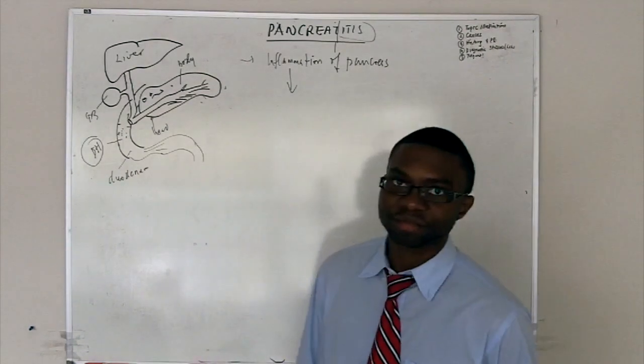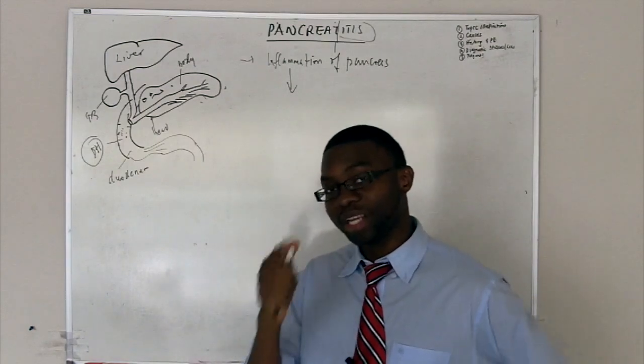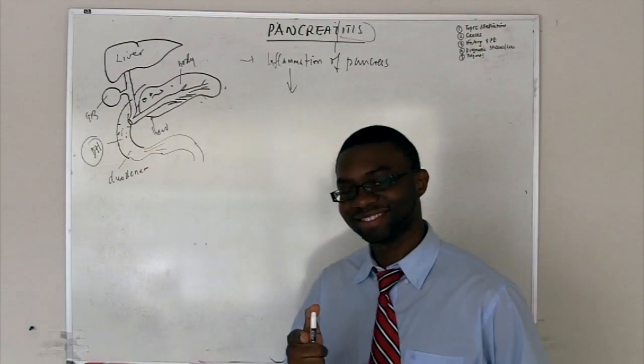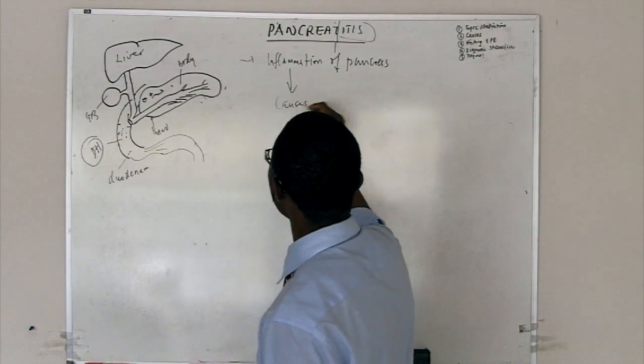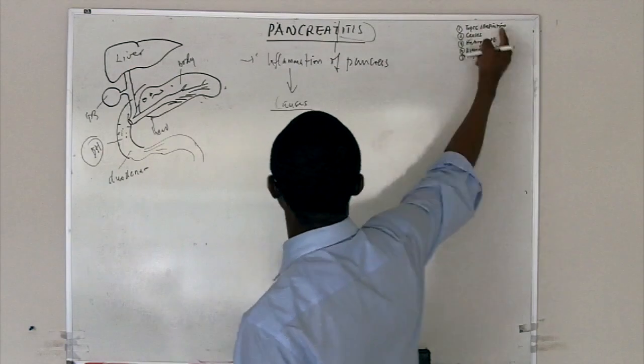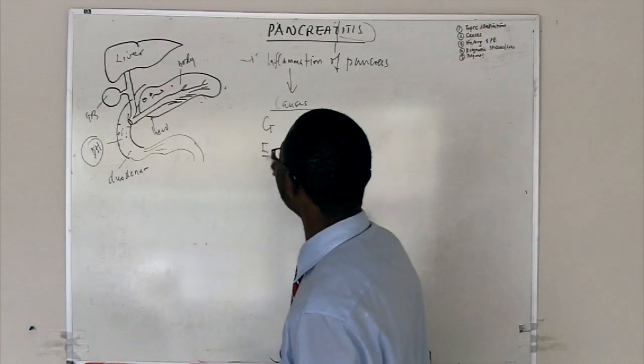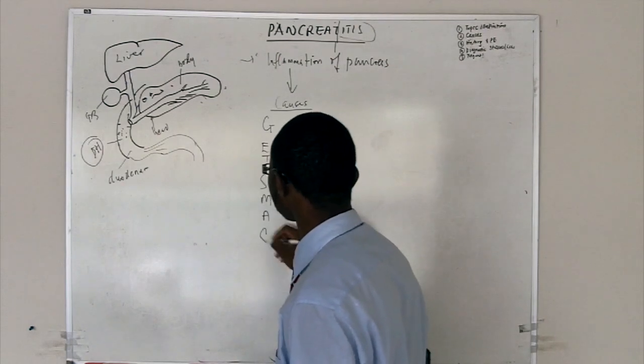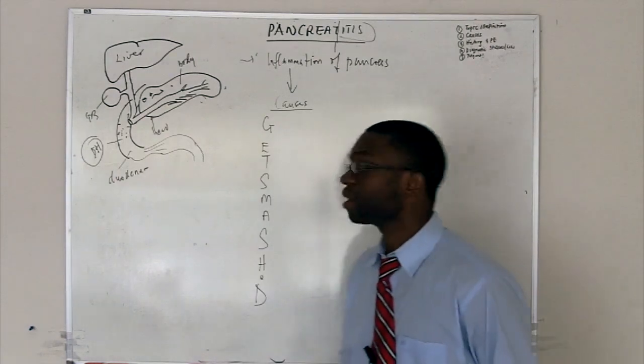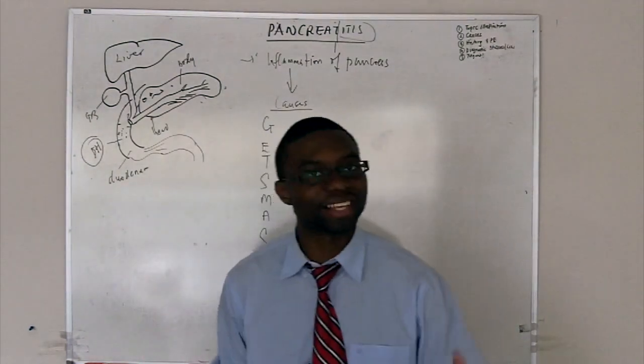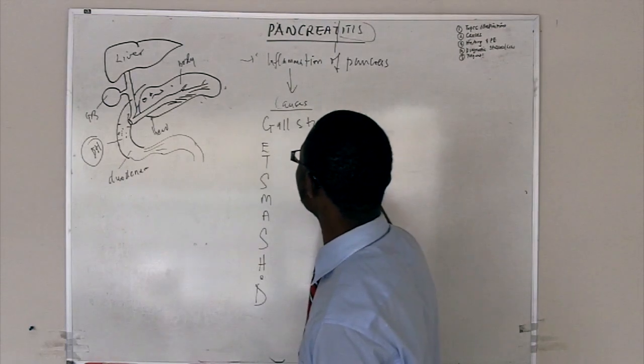Let's get on the bandwagon and see what mnemonic we're gonna be using. We're gonna smash the pancreas. When it gets smashed, that's how it gets inflamed. What are the causes of pancreatitis? The most common things that cause pancreatitis: gallstones.